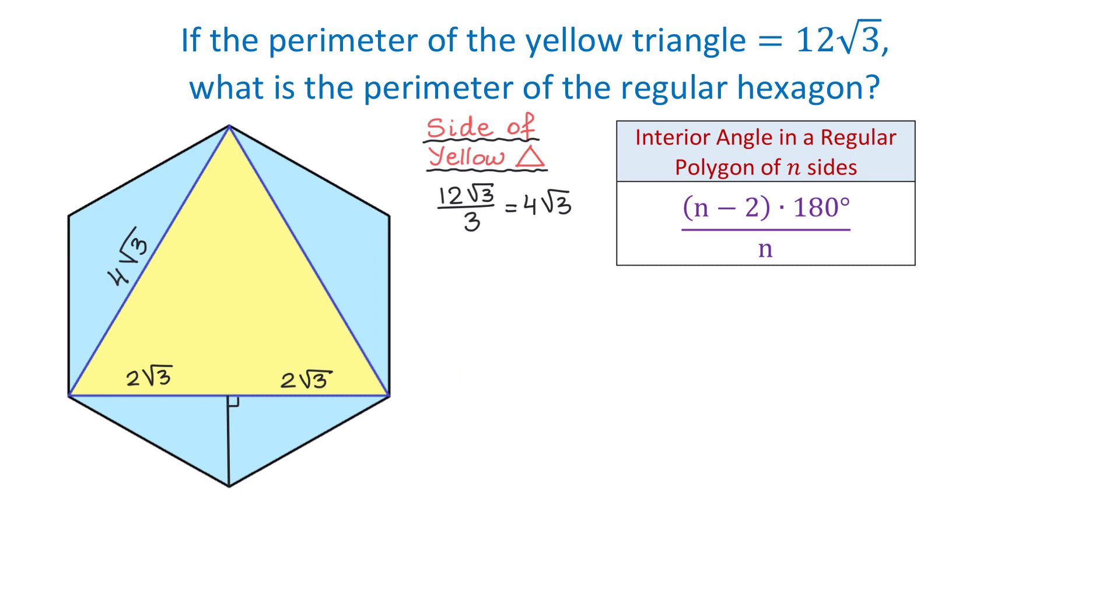To find an interior angle, we will write 6 minus 2 times 180 degrees divided by 6. Then 6 minus 2 is 4, 4 times 180 is 720, and 720 divided by 6 is 120 degrees. So each of the angles of this regular hexagon is 120 degrees.